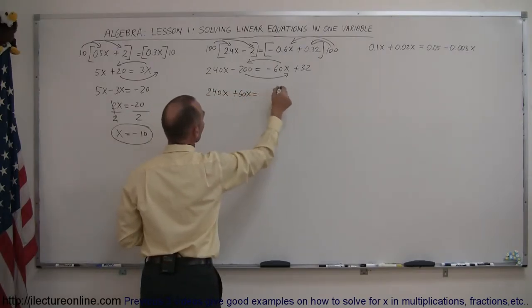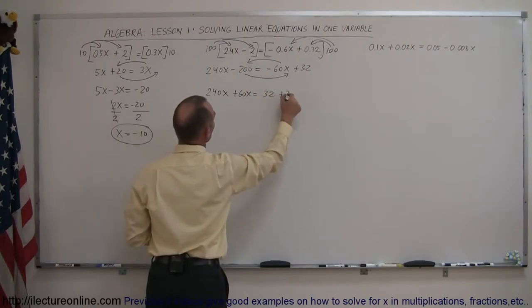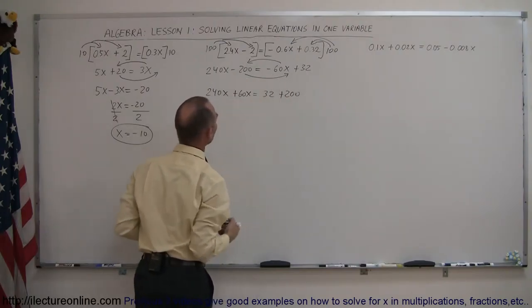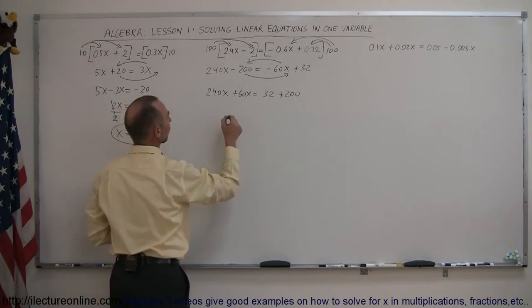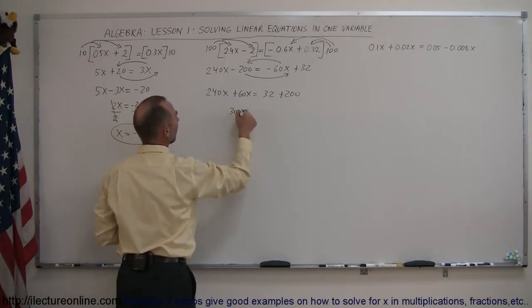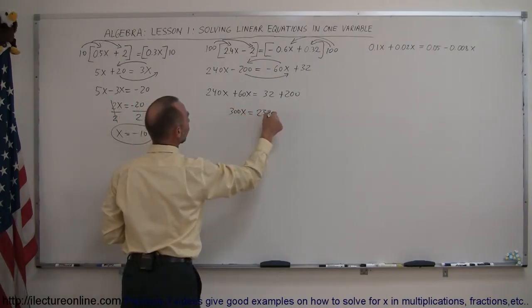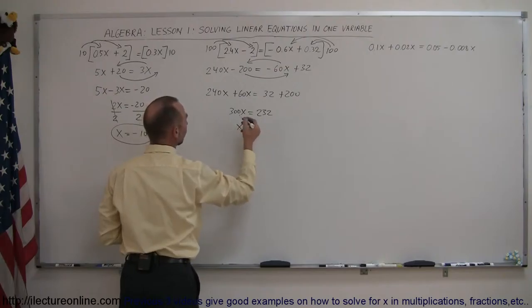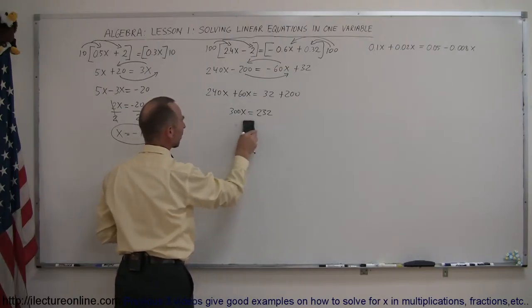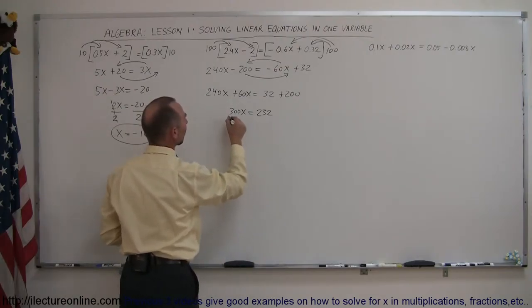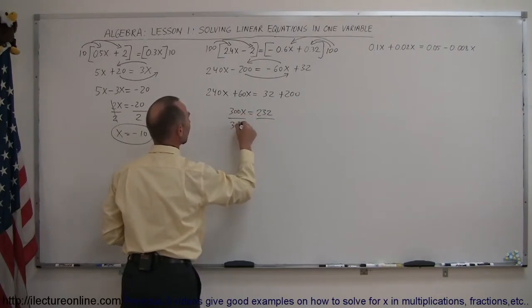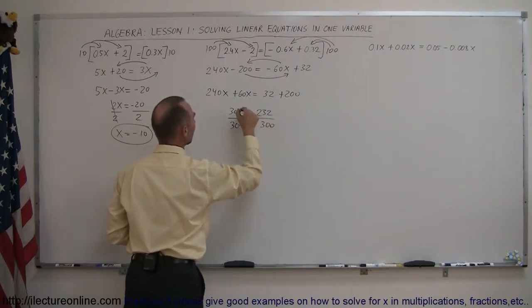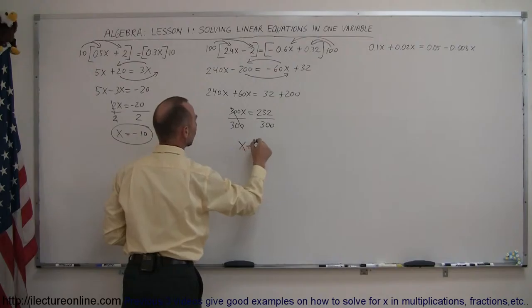Now the next step is to move all the terms with the x to the left side, all the terms without the x to the right. So this moves to the left, this moves to the right. Again, remember, when you cross the equal sign, you have to change the sign of the term. So this becomes 240x plus 60x equals 32 plus 200. When we cross the equal sign, combining like terms on both sides,